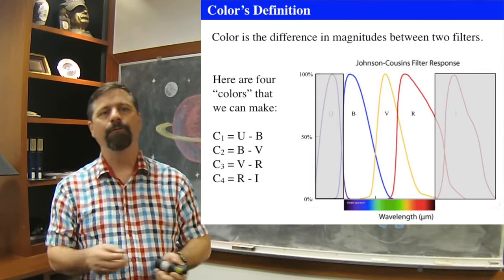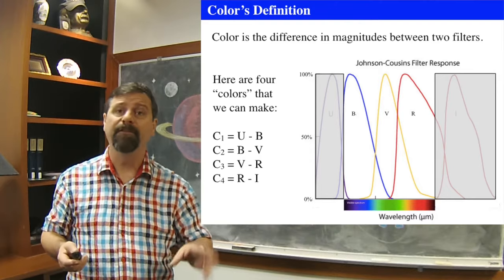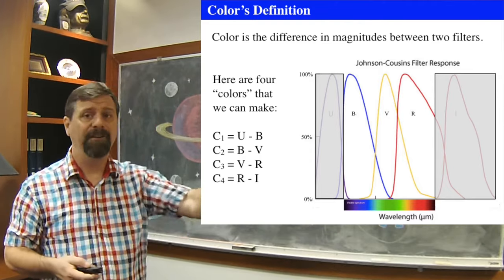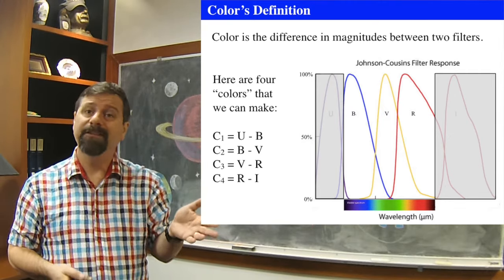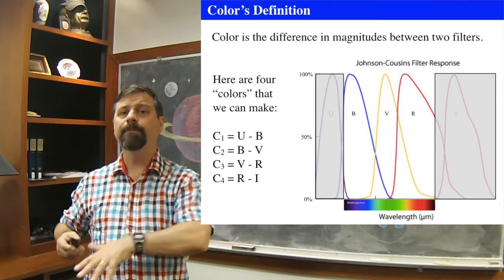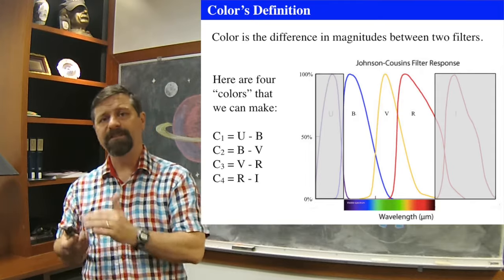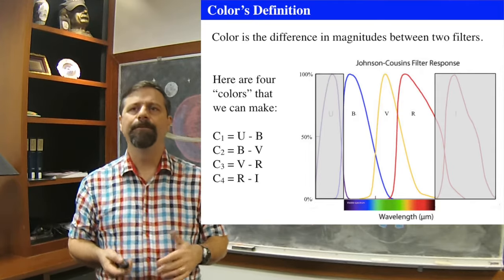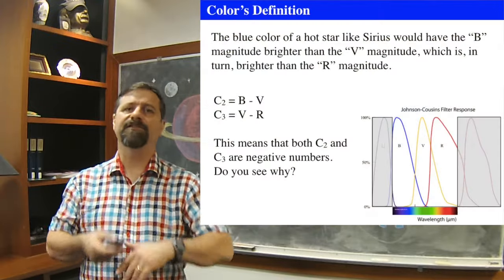Typically you look at adjacent filters — U minus B, B minus V, V minus R, R minus I — and call those the colors. A standard color used frequently throughout all astronomy is the B filter observation minus the V filter observation. You take the magnitude of B and subtract the magnitude of V — that difference is the B minus V color. This allows us to quantify color rather than calling it magenta or aquamarine or any of the names from a Crayola crayon box. We want to use the definition of color to get data and understanding. The blue star Sirius — which by eye you can see in the sky as blue — must be brighter in the B magnitude than in V.